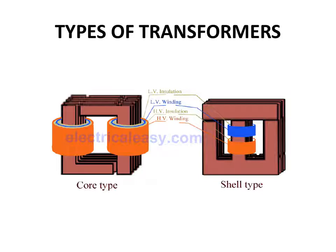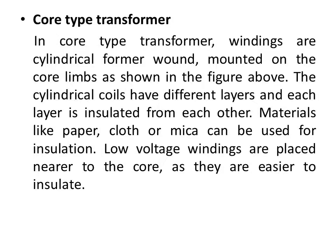In the core type, the windings are cylindrical formers mounted on the core limbs. The cylindrical coils have multiple layers and each layer is insulated from the others using materials like paper and cloth. In the core type construction, the flux has a single path — the flux flows in the core. But in the shell type, the flux has two paths, so at the center the flux is twice that of the two limbs, and the flux is divided — phi by 2 on each outer limb.